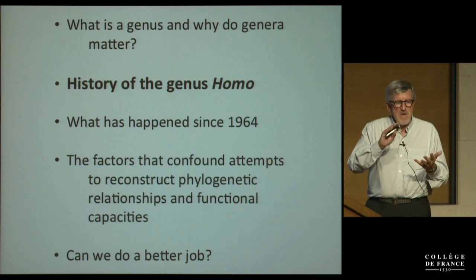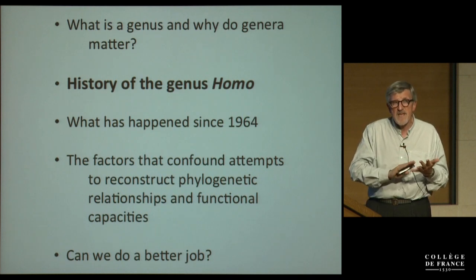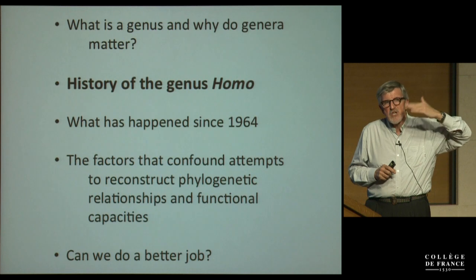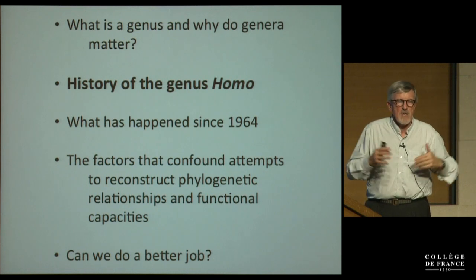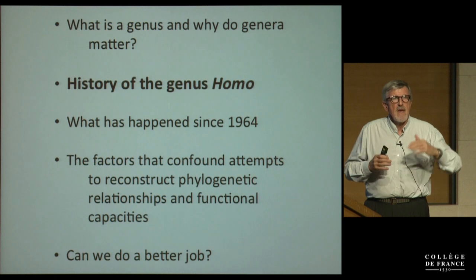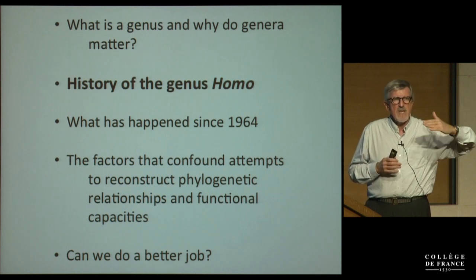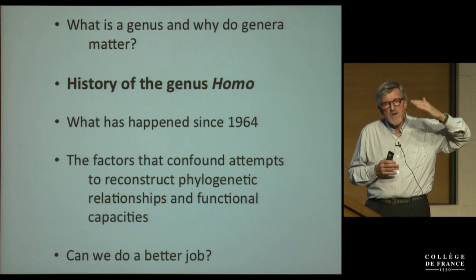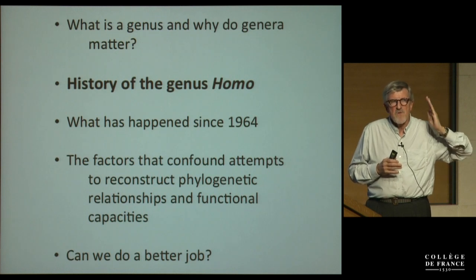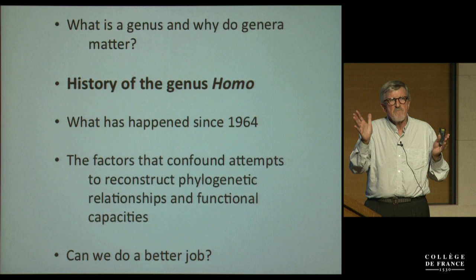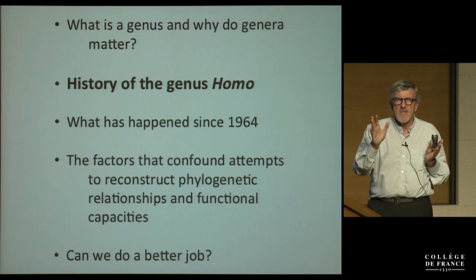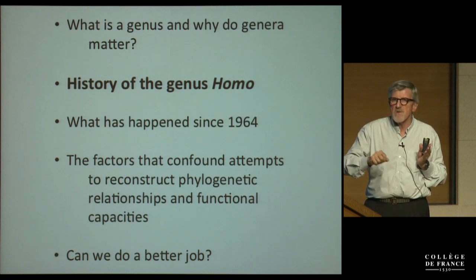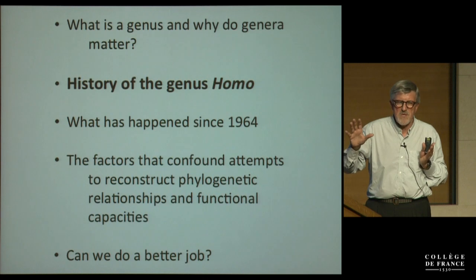We're looking for a monophyletic group or clade, and we're looking for a grade. In other words, we're looking for a change between Australopithecus or archaic hominins and later Homo — a gap where we can say there is a shift in adaptive grade. We're also looking for evidence of a group of hominins that are more closely related to modern humans than they are to any other hominins, such as Australopithecus africanus or Paranthropus robustus.